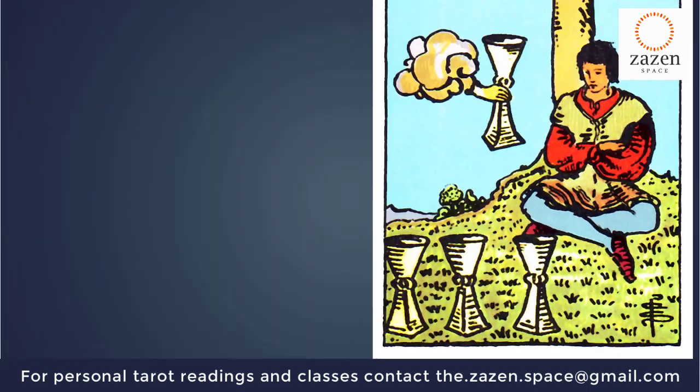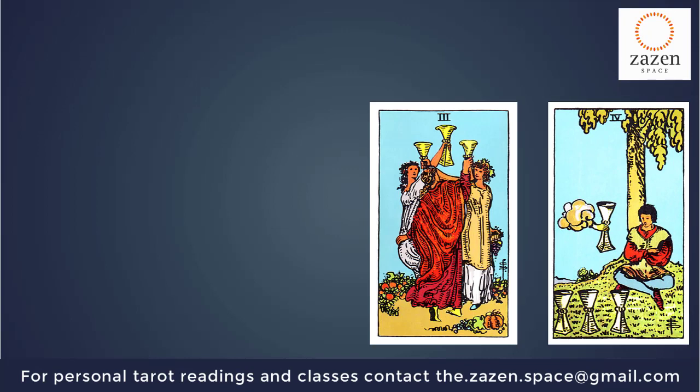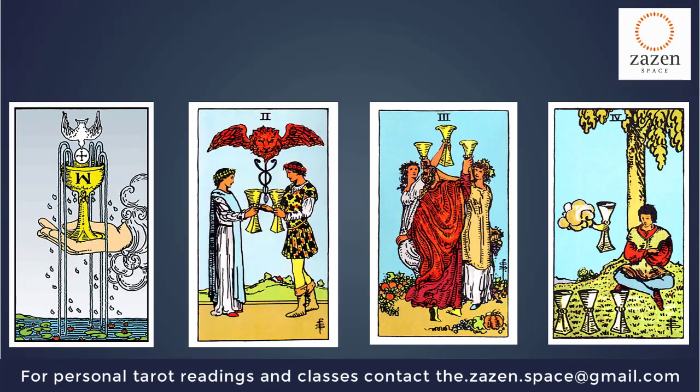I'd like to connect this card with the journey from Ace to Three of Cups. In the Ace of Cups we had a new offer; in the Two of Cups we decided to take that offer by combining both cups and letting them flow together, merging into one. In the Three of Cups we grew that connection, involving more people and enjoying our emotional state — happiness, friendships, relationships. So the Ace, Two, and Three of Cups were all very positive cards. Why then is this card so gloomy?